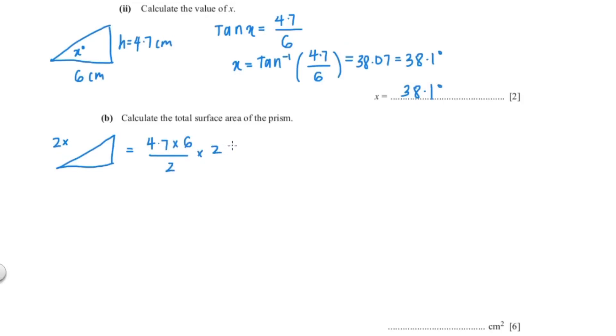So we have 2 triangles so I'm going to multiply that by 2 and that could cancel out so that would give me 28.2 cm². And for a rectangle our width is 18 and our base is 6. So 18 times 6 should give you 108 cm².